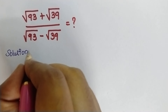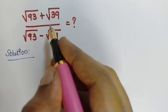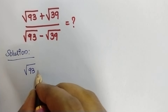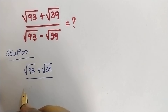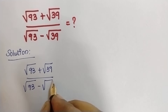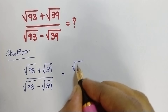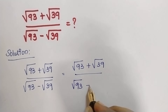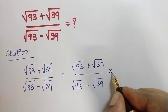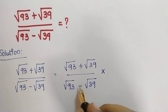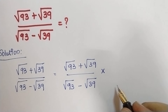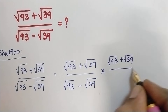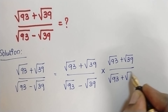The first step is we need to take the conjugate on both sides. Therefore, root 93 plus root 39 divided by root 93 minus root 39, multiplied by its conjugate — which means we need to change the sign of the denominator and write it in the numerator as well as in the denominator — giving us root 93 plus root 39 divided by root 93 plus root 39.